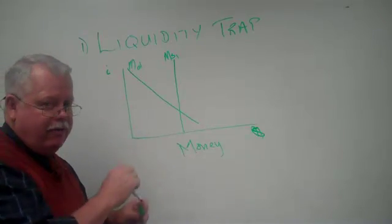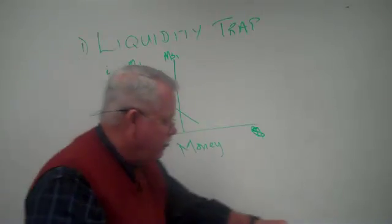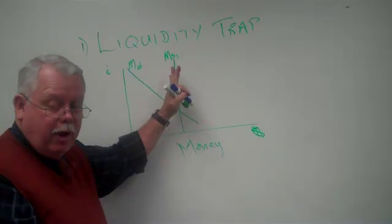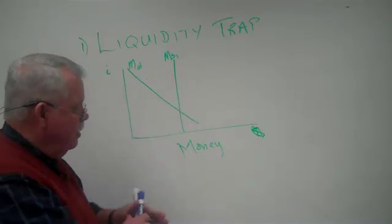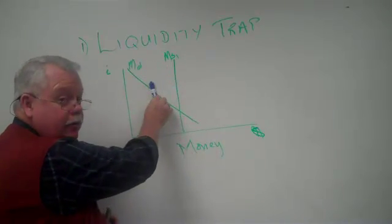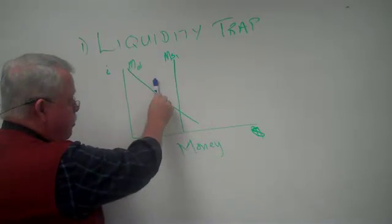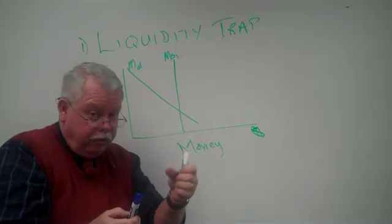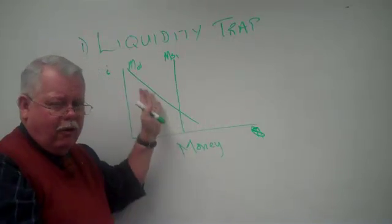What we're looking at here is the quantity of money and the interest rate or price of money on the vertical axis. This goes right back to everything we did about monetary policy. If the Fed reduces the supply of money, the supply curve shifts to the left and interest rates go up. If you increase the supply of money, interest rates will fall.